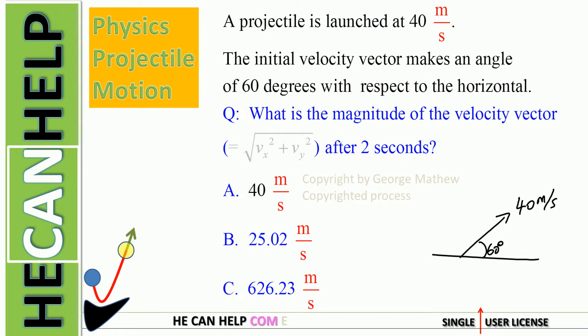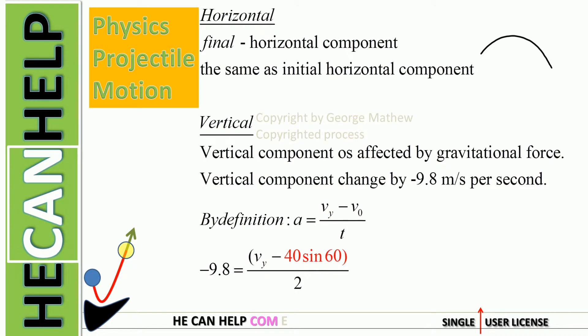What is the magnitude of the velocity vector after two seconds? Our trajectory is as shown. After two seconds, let's assume the projectile is at point B — point A being the start. At point B we need the horizontal x and vertical y components. Once you have those, the magnitude of the velocity vector is given by v = √(vx² + vy²).